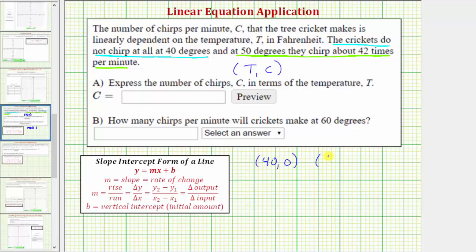We're also told at 50 degrees they chirp 42 times per minute, which would be the ordered pair (50, 42). A linear equation in slope intercept form is Y equals MX plus B, where X is the input and Y is the output. But because we're writing C in terms of T, our equation is going to be in the form C equals MT plus B.